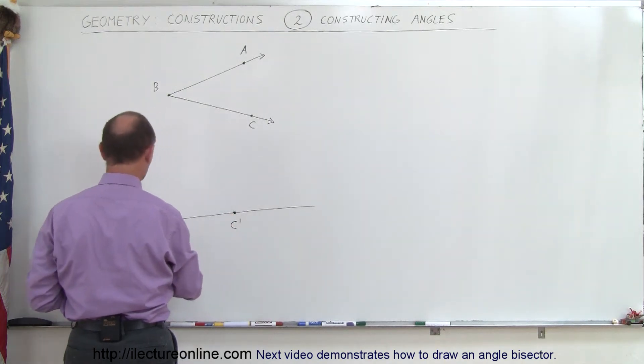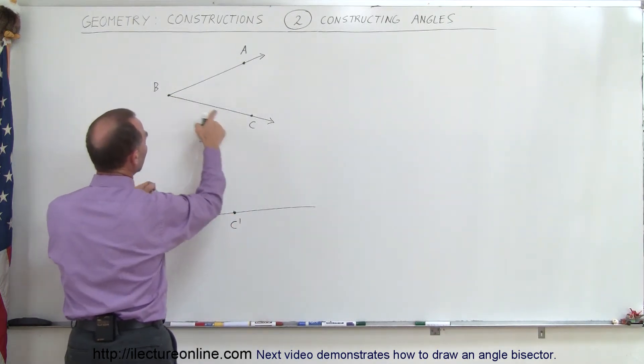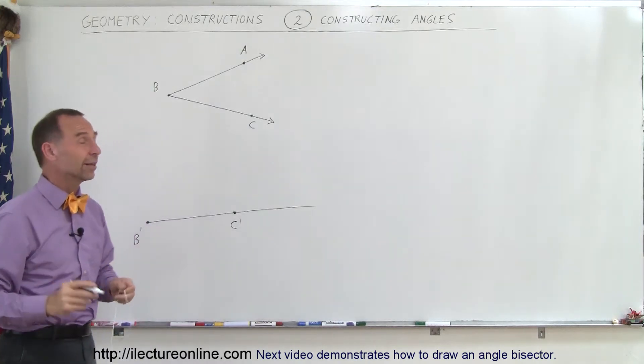So there's my point C' and so the distance from B' to C' should be equal to the distance from B to C. But that doesn't give us our angle yet.